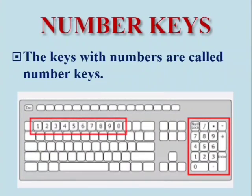The number keys are highlighted in red color box in the given picture. A keyboard has two sets of number keys. The first set of number keys is present above the alphabet keys.